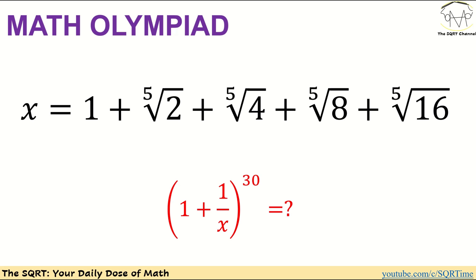Hello everyone, welcome to the SQRT channel. In this video we are going to take a problem that deals with evaluating an expression. For the expression itself, we defined x as sum of five terms and in general we have the fifth root of two to the power of i. We have here from i equals to zero, then i equals to one which is going to be two.